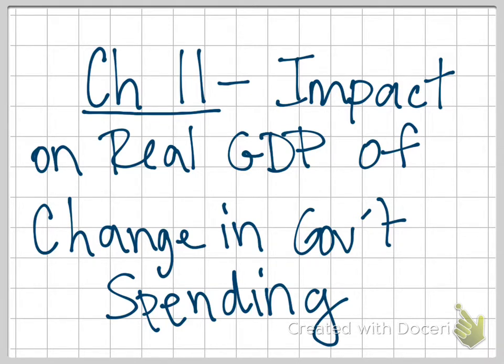So in this one, what we're specifically going to look at here is how a change in government spending will cause real GDP demanded to either increase or decrease. It's going to be basically identical to the impact of a change in investment spending, so that's why I'm suggesting you watch the Chapter 9-10 video first.